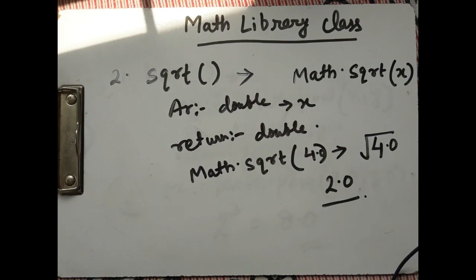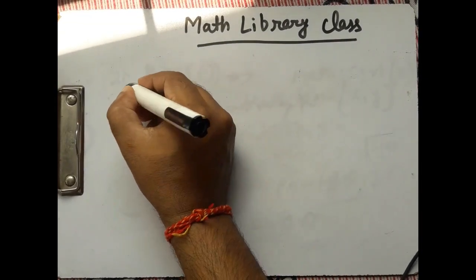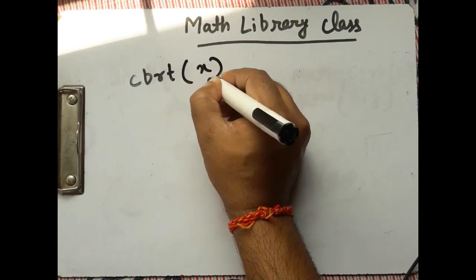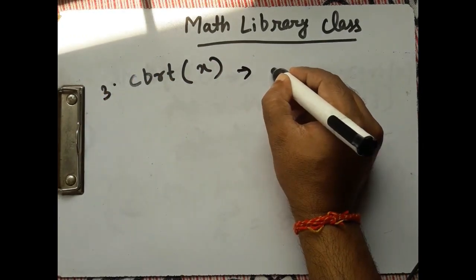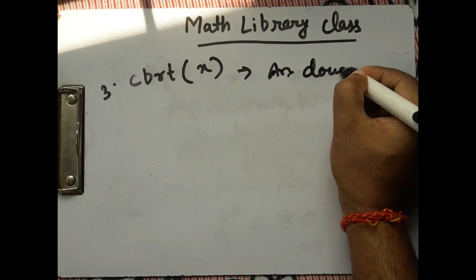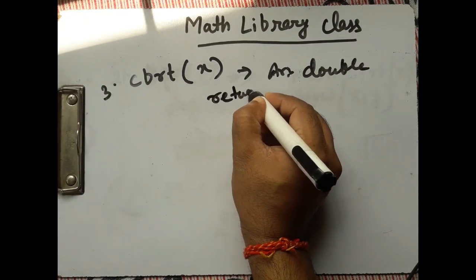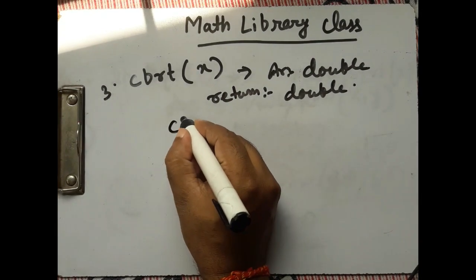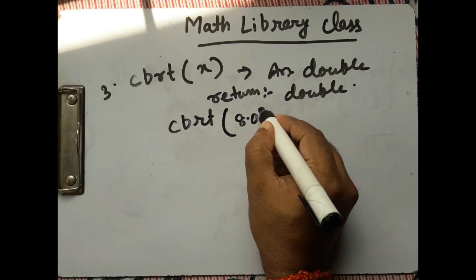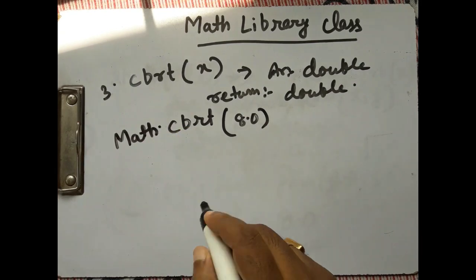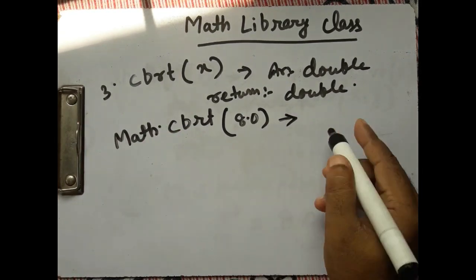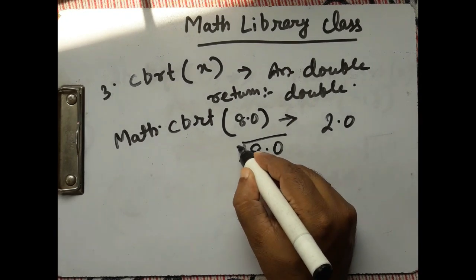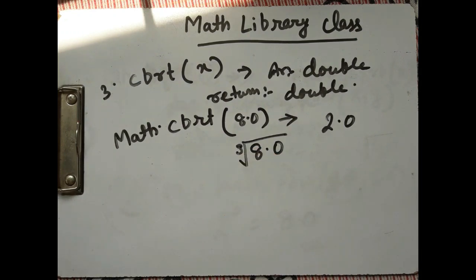Next is cube root, Math.cbrt(). The argument is also double and the return type is also double. For example, Math.cbrt(8.0) — the answer will be 2.0 because the cube root of 8.0 is 2.0.